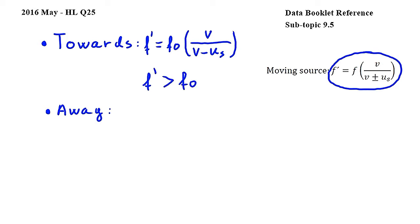Looking at the frequency detected when the train is moving away from the observer, we get f dash is equal to f zero times v over v plus us. This means that since v over v plus us is less than one, f dash is less than f zero.